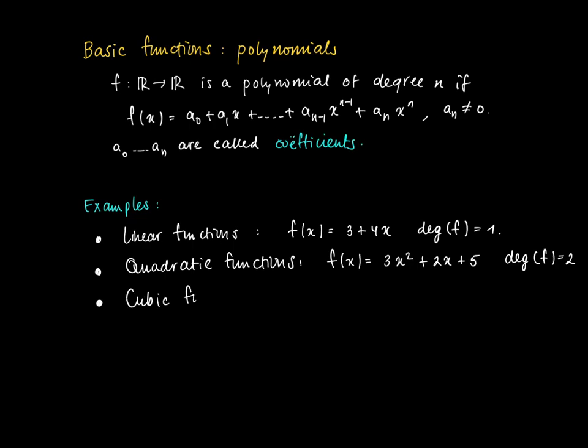The cubic functions are all polynomials of degree 3. For example, f(x) = 4x³ + 2x² - x - 10.